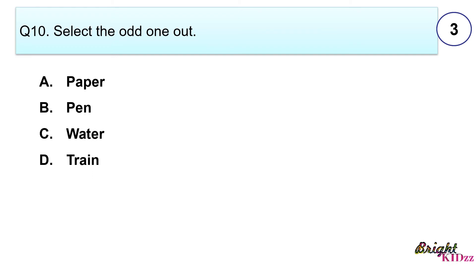Select the odd one out. A. Paper, B. Pen, C. Water, D. Train. Answer C. Water. Because rest all are man-made non-living things. Water is a natural non-living thing.